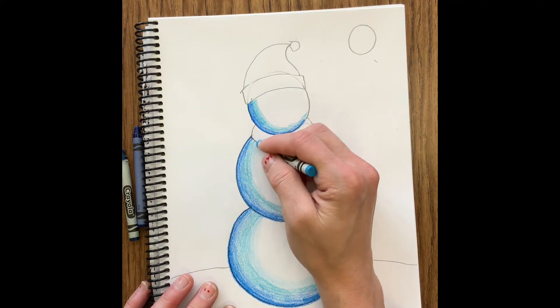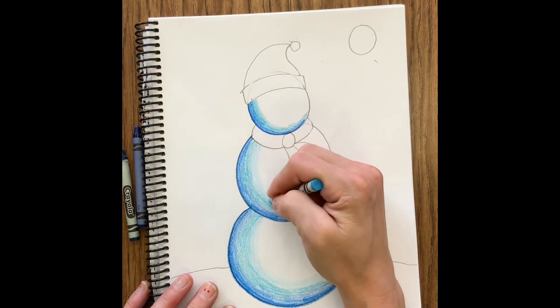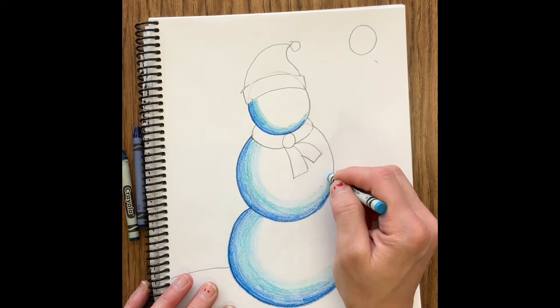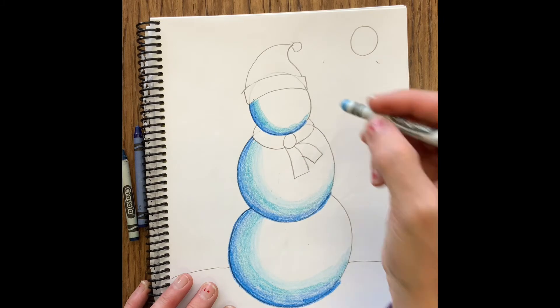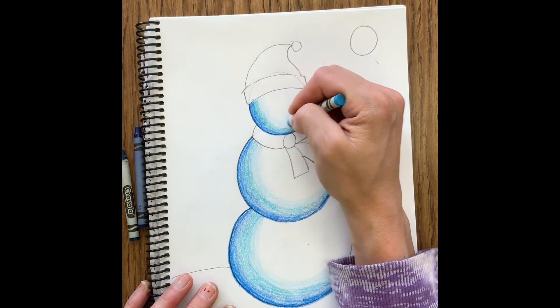But again I am not coloring in a flat line or a straight line. I have to color in a curve. If I don't follow the curve of that snowball then it doesn't make my snowman look 3D. The shadow effect isn't the same if I draw with a straight line.